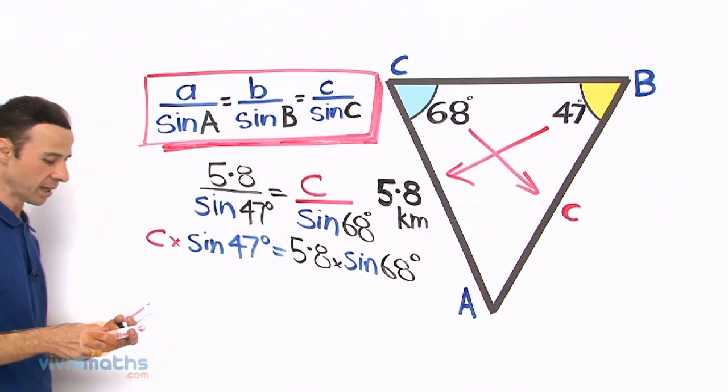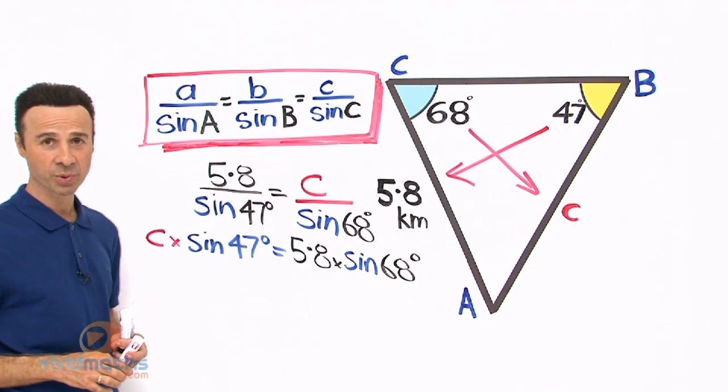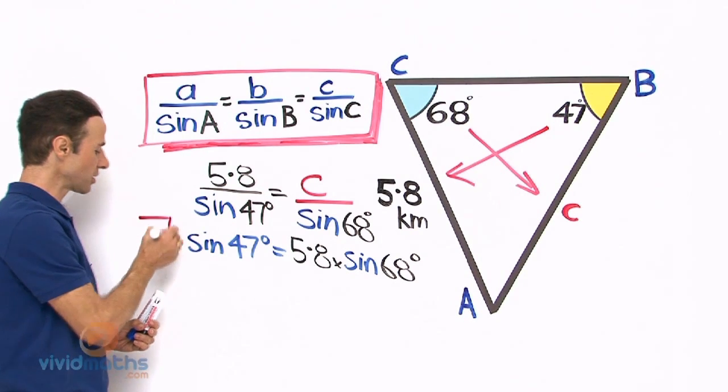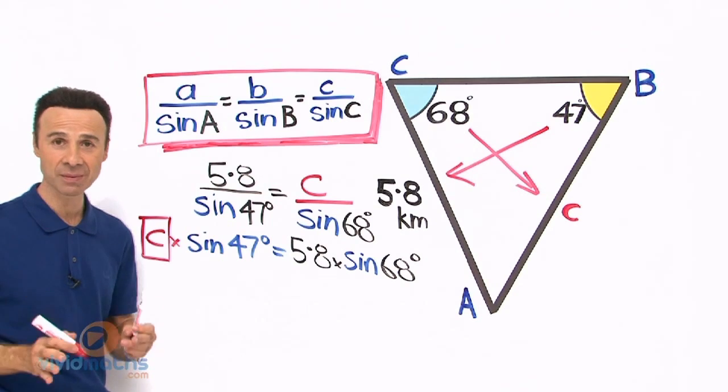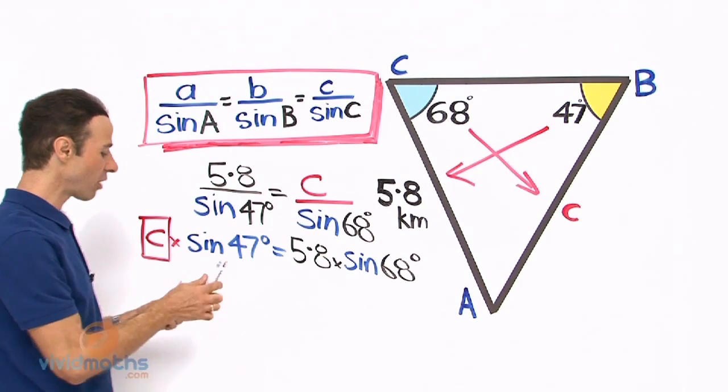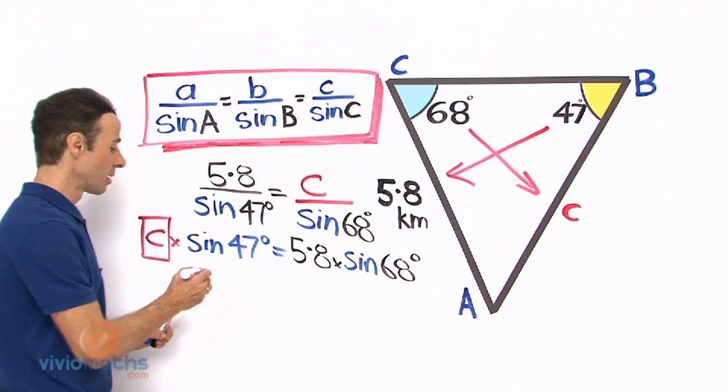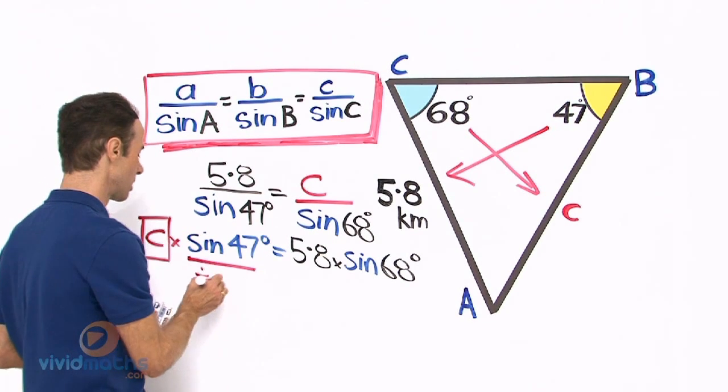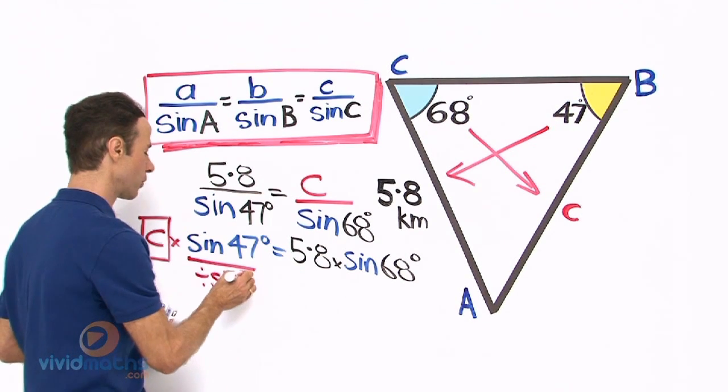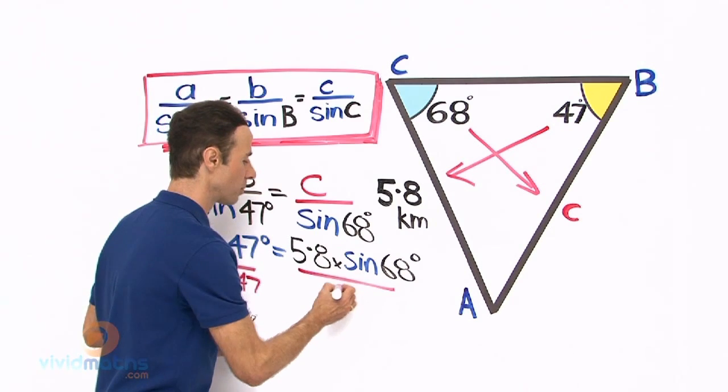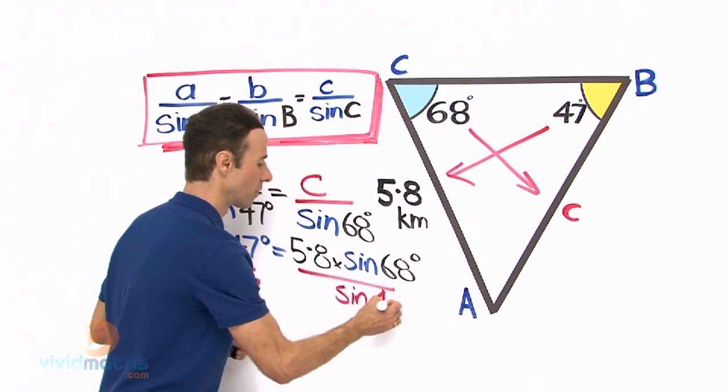We want to get c by itself, the pronumeral, so we can find the solution. We want it as the subject of this equation, so let us divide both sides by sine 47 to eliminate that. Divide by sine 47 on both sides.